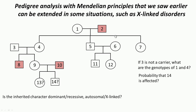This is a family tree — parents and then three offspring here — they marry and have children, with one more generation occurring. We are trying to answer some questions related to these. The first question was: is the inherited character dominant or recessive? Is it autosomal or X-linked?